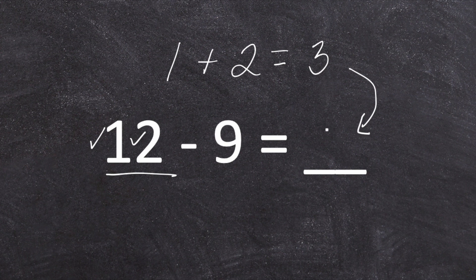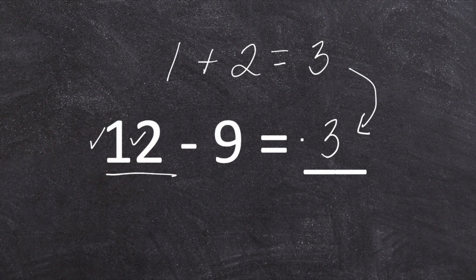One plus two gives us three. That just happens to give us the answer to our subtraction number sentence. Twelve minus nine equals three.